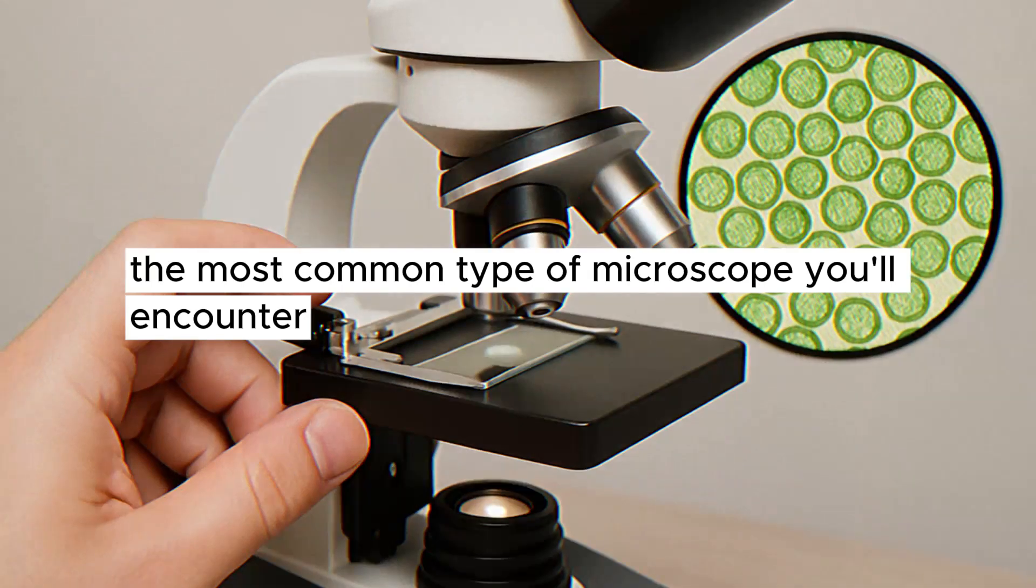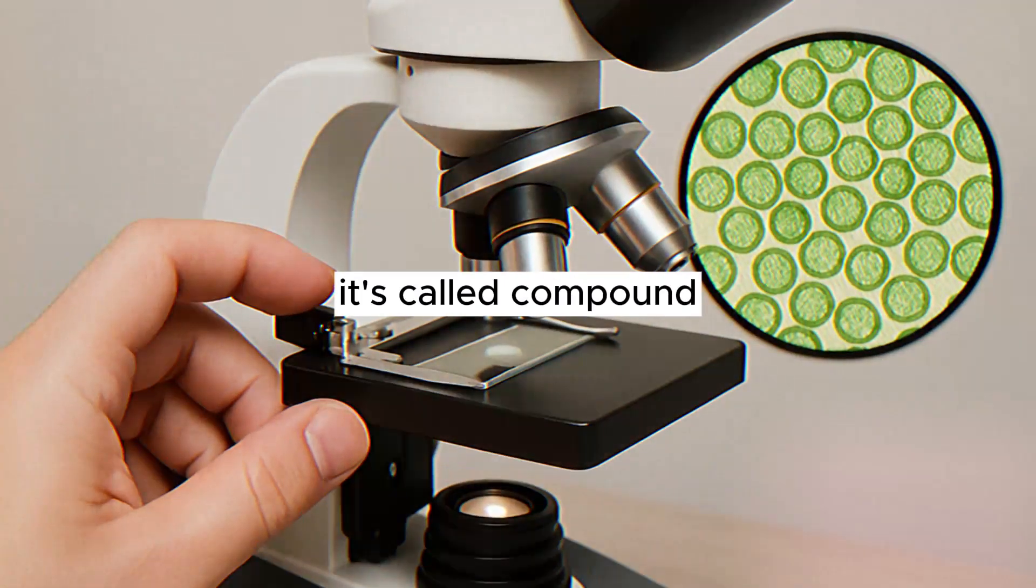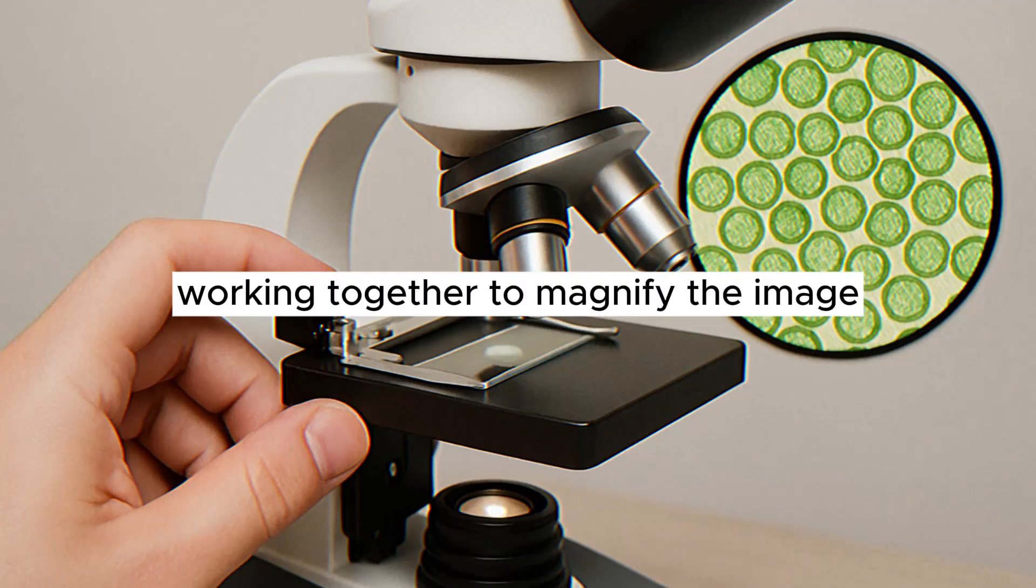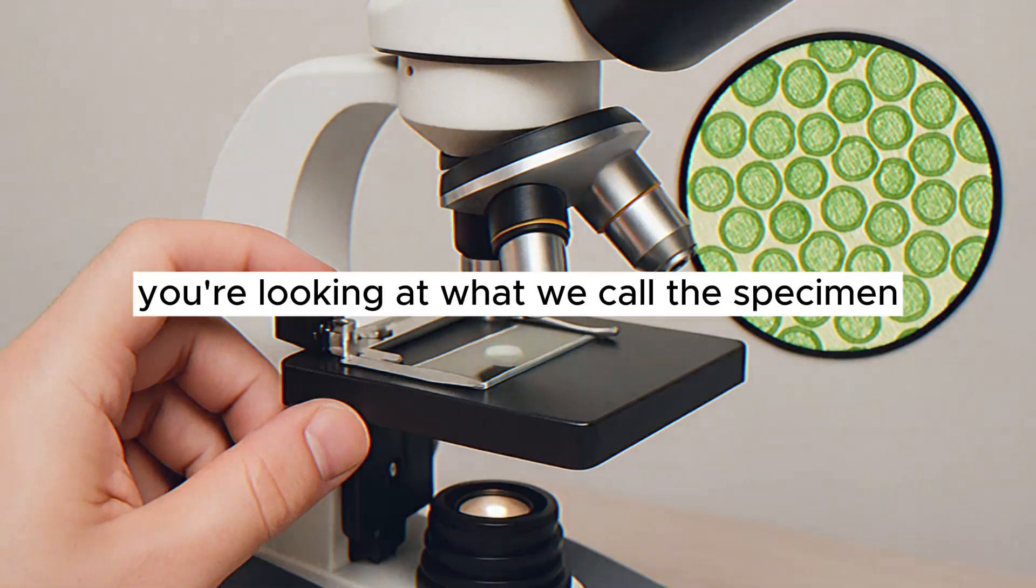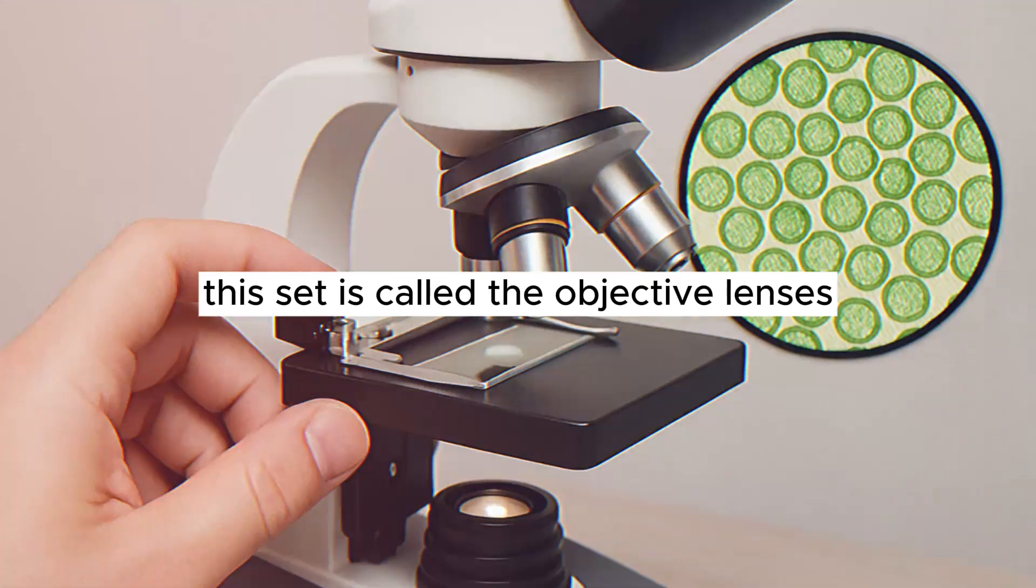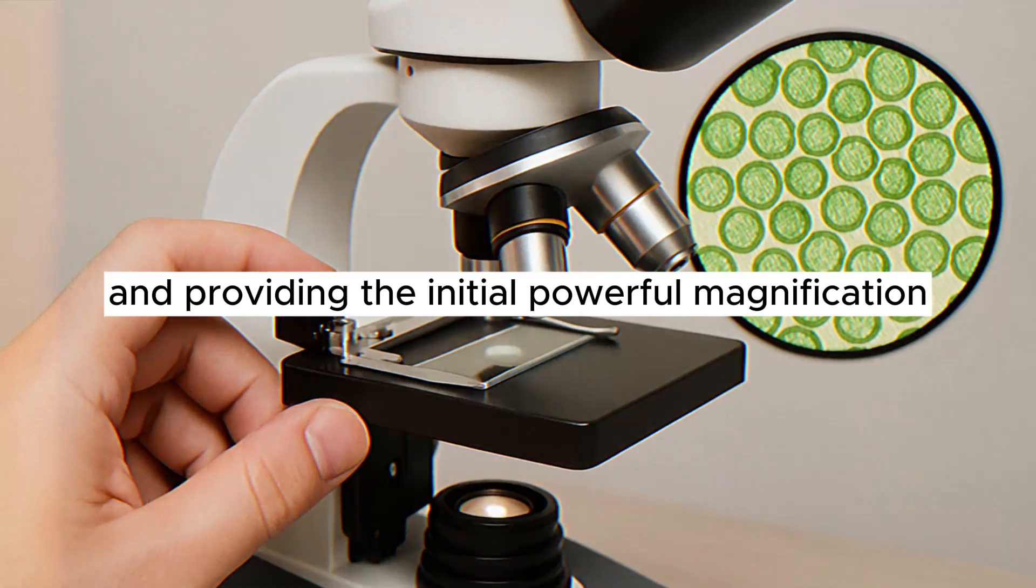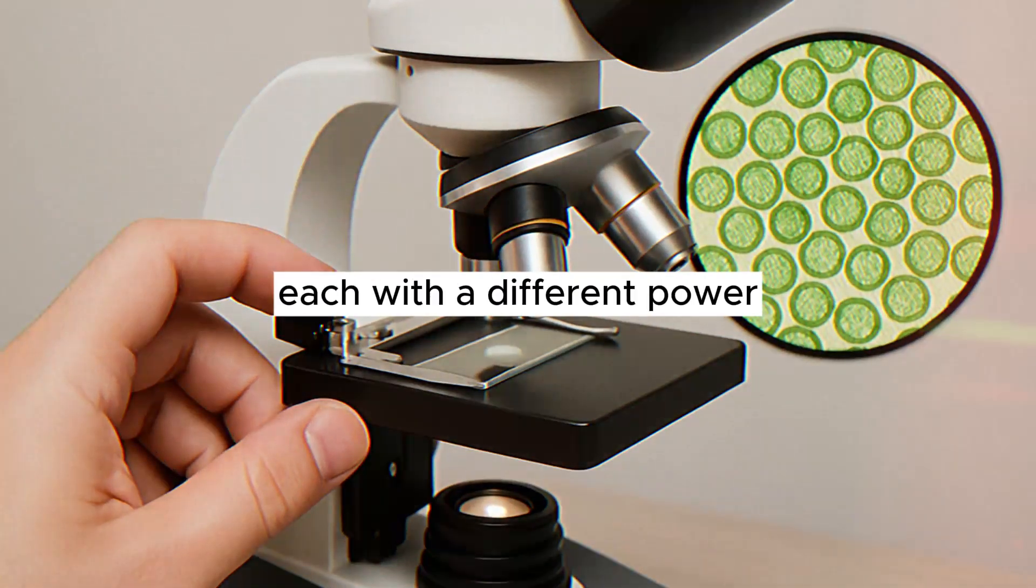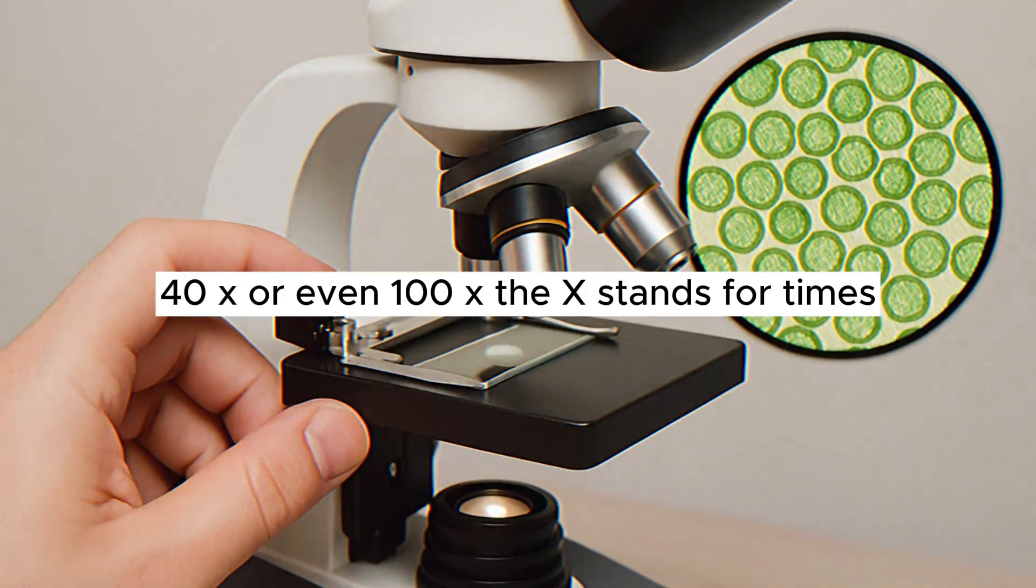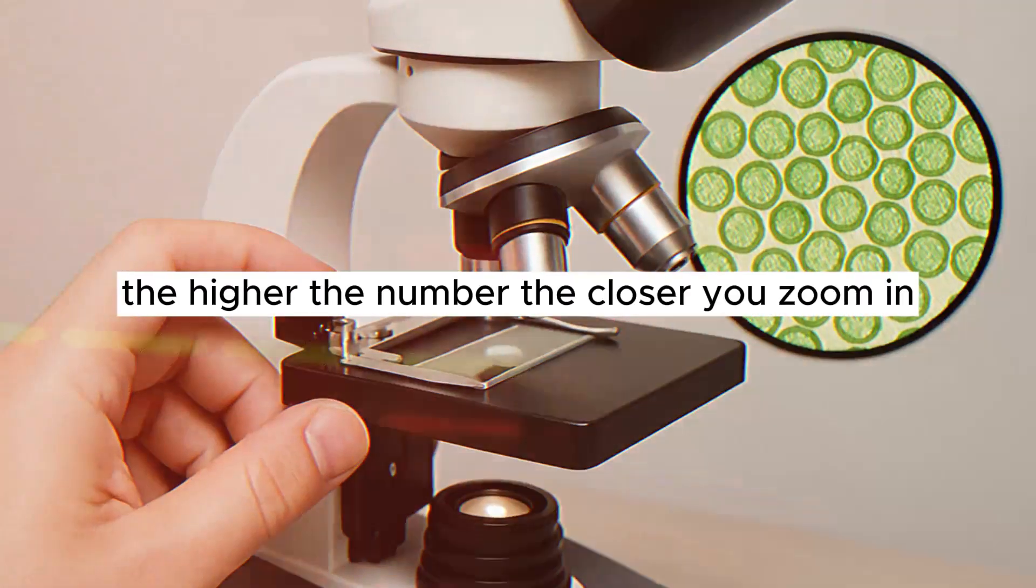The most common type of microscope you'll encounter, especially in schools or starting out, is called a compound light microscope. It's called compound because it uses two sets of lenses working together to magnify the image. The first set of lenses is really close to the tiny thing you're looking at, what we call the specimen. This set is called the objective lenses. These are the ones that do the heavy lifting of gathering the light and providing the initial powerful magnification. You usually have several objective lenses mounted on a rotating turret, each with a different power, like 4x, 10x, 40x, or even 100x. The x stands for times, so a 10x lens makes the object look 10 times bigger than its actual size. The higher the number, the closer you zoom in.